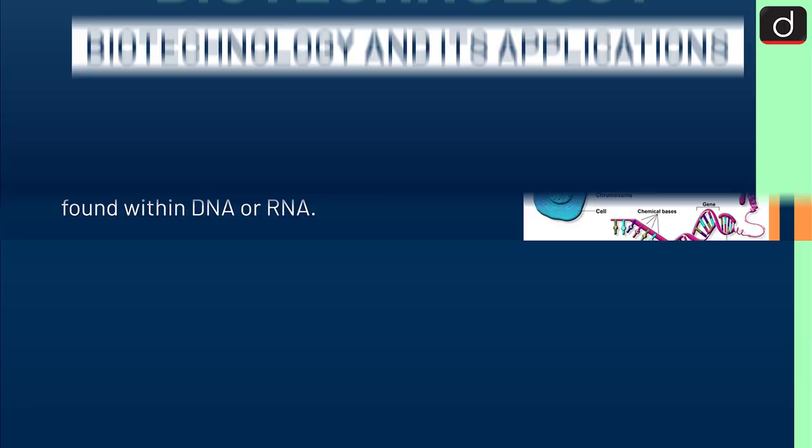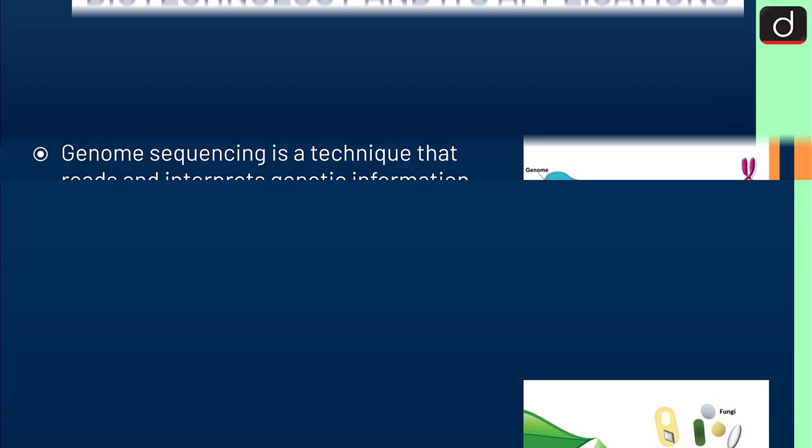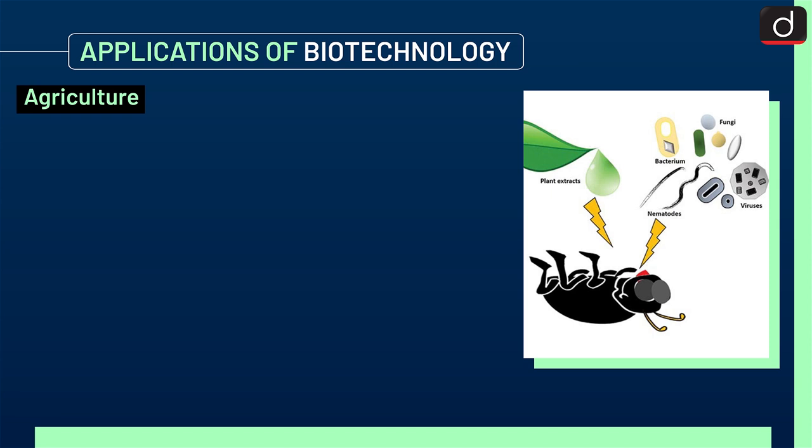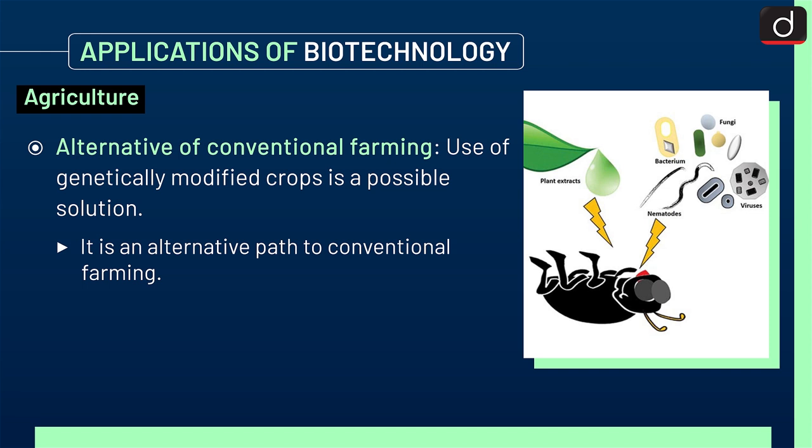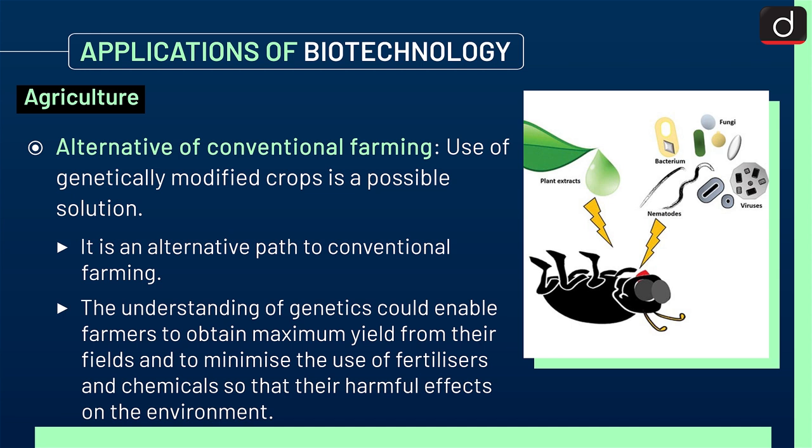Now let's discuss the applications of biotechnology. First is agriculture. The use of genetically modified crops is a possible alternative to conventional farming. The understanding of genetics could enable farmers to obtain maximum yield from their fields and to minimize the use of fertilizers and chemicals so that there are fewer harmful effects on the environment.